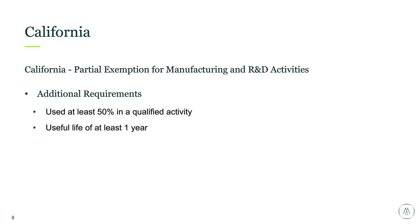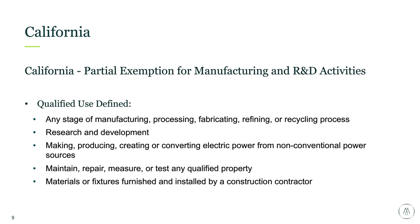Additional requirements include the 50% test in a qualified activity and a useful life requirement of one year or more — so we're looking at fixed assets, not consumables. California has been clear that it is a strict one-year test, even if you don't capitalize assets unless there's a five-year useful life. Qualified use is defined as any stage of the manufacturing, processing, fabricating, refining, or recycling process — includes research and development, making, producing, creating, or converting electrical power from non-conventional power sources, maintaining, repairing, measuring, or testing any qualified property, and materials or fixtures furnished and installed by a construction contractor.